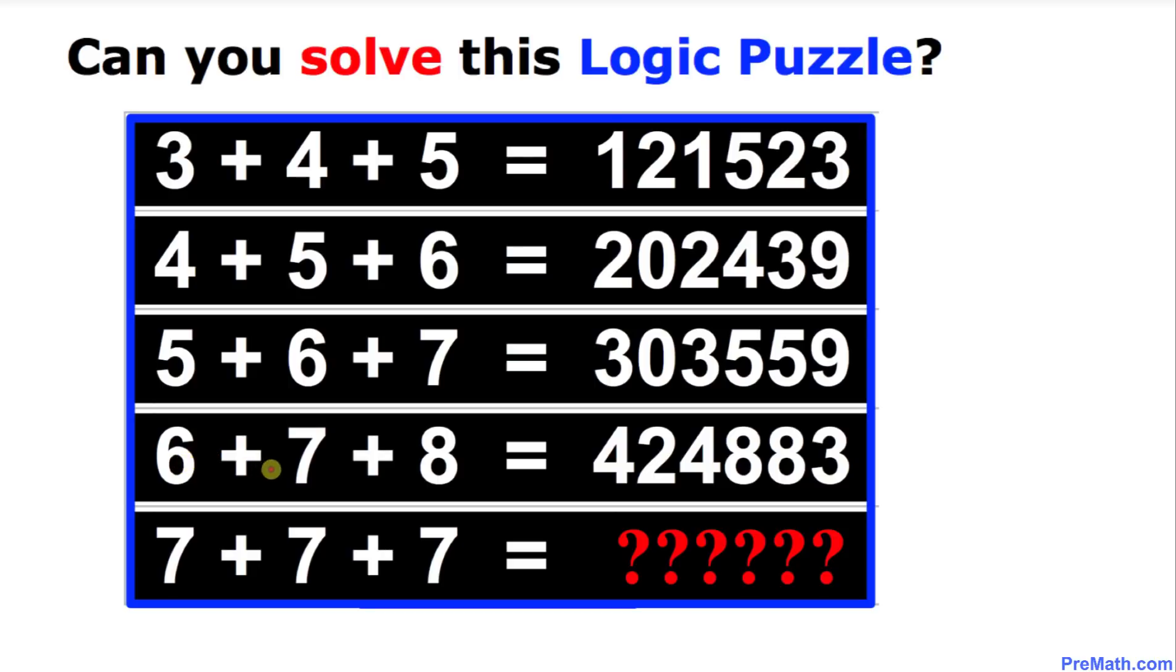And over here, 6 plus 7 plus 8 equals once again a 6-digit number. Now the question is, how much is it going to be when we add 7 plus 7 plus 7?